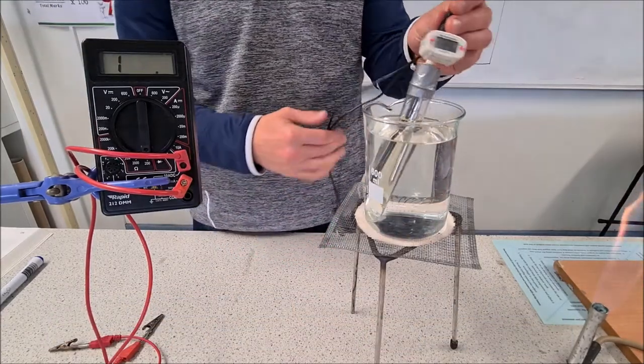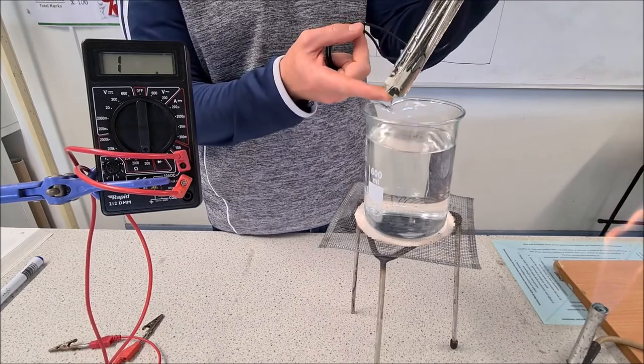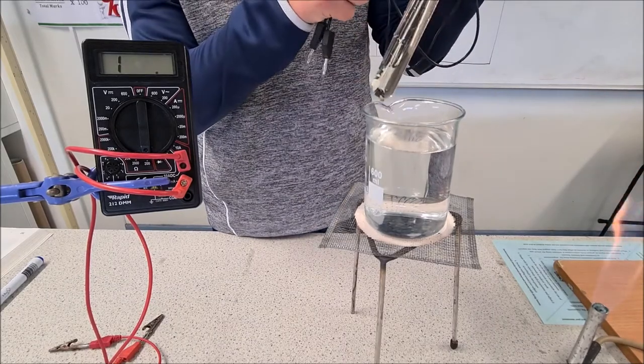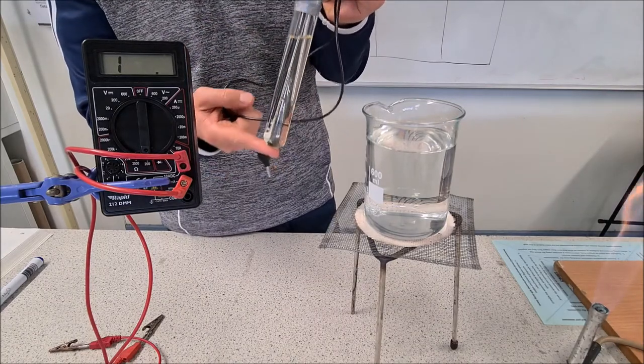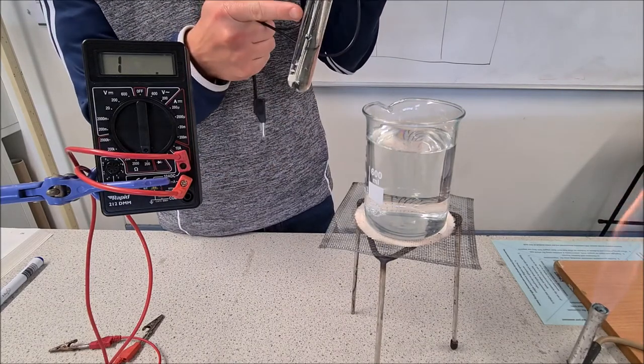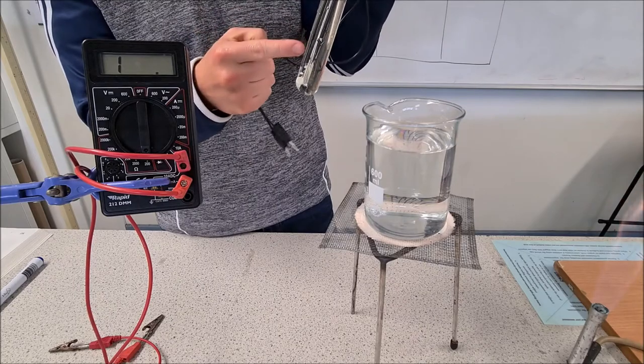This is our thermistor. We have it in glycerol, so it's in oil. The thermistor is coming down there, and then we have the thermometer going in down beside it. We're measuring the temperature of the glycerol which is surrounding the thermistor.